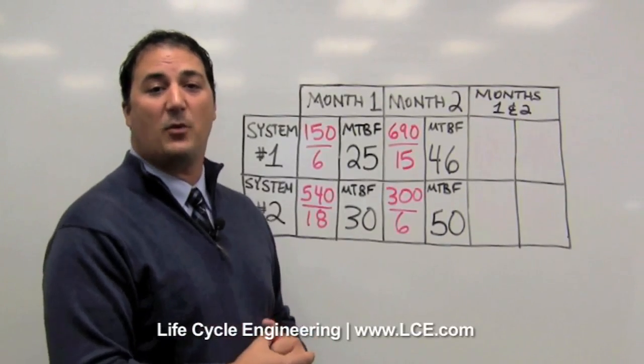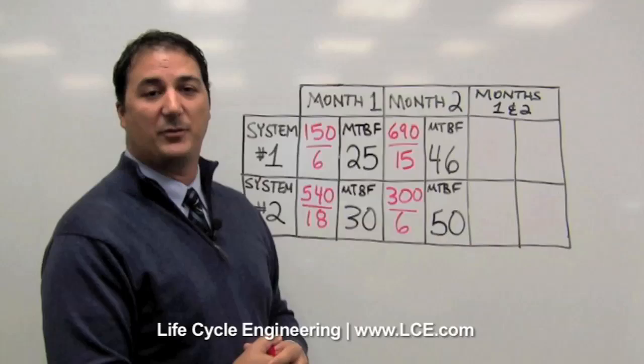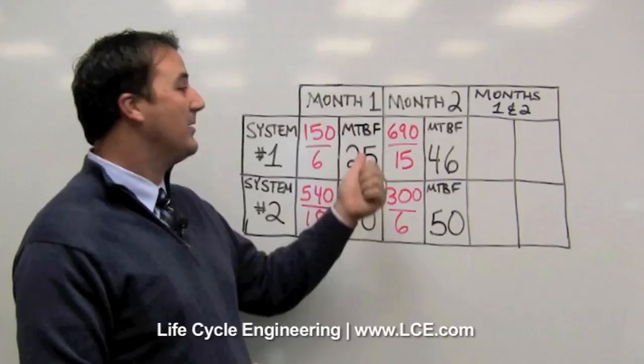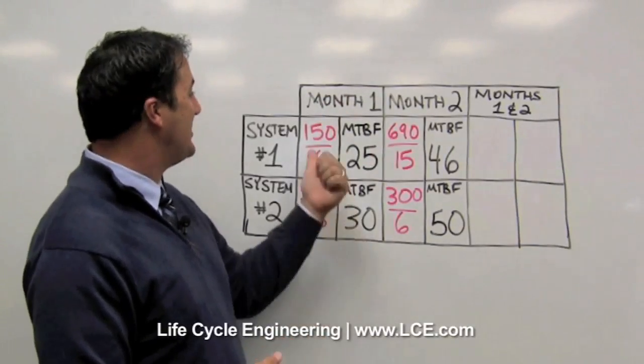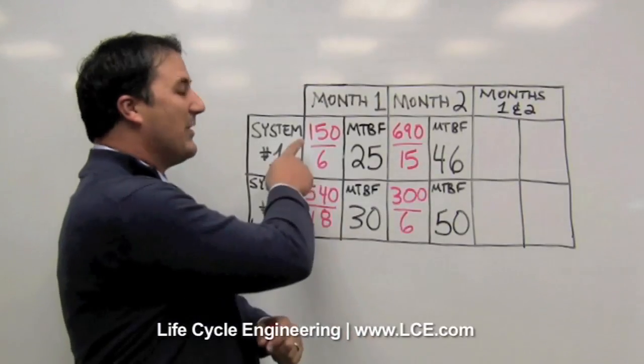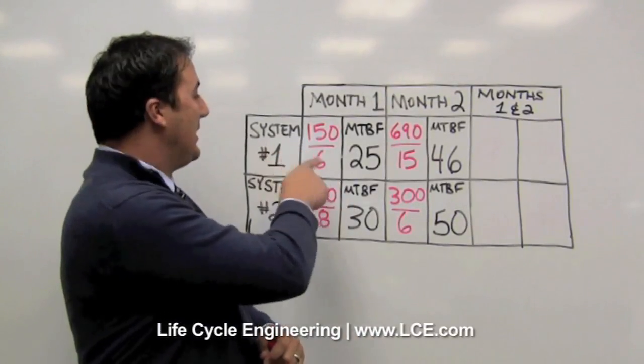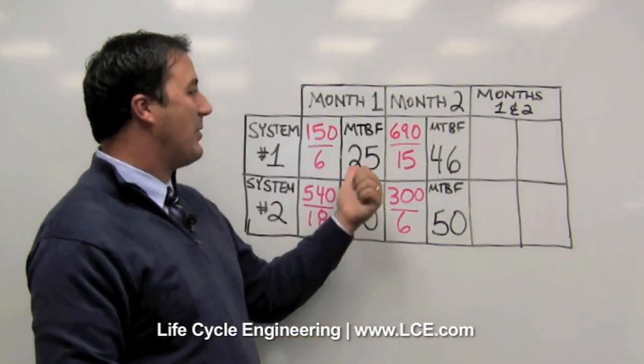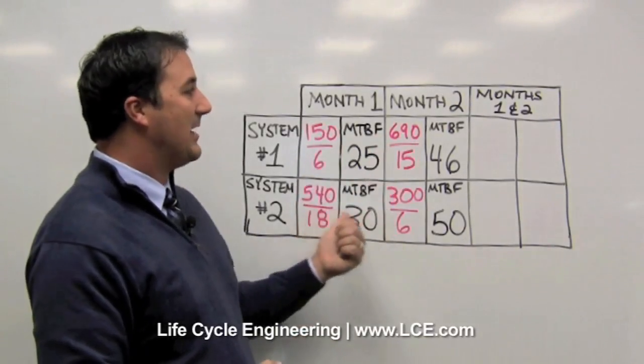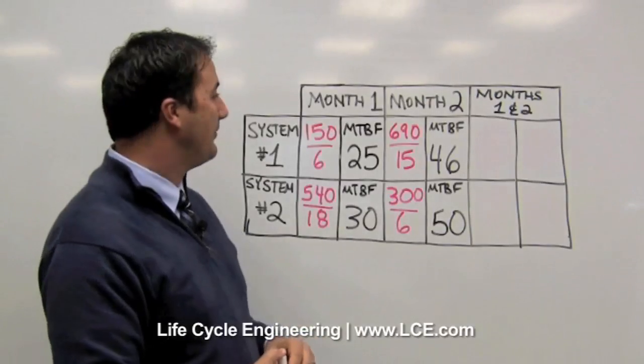We wanted to find out a little bit more about how they came up with their mean time between failure data, so we asked them for the run time and the number of failures that each system had in each month. So we can see here in this example that system one in month one ran for 150 hours and had six failures, and that's how they came up with their mean time between failure of 25.